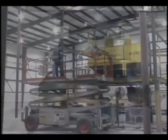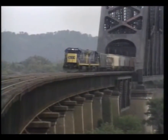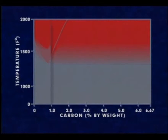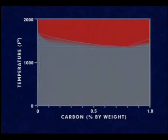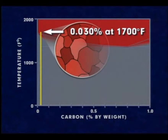For this reason, steel is suited to a wide range of engineering applications. Let's take a closer look at some examples of how carbon affects the hardness of steels. If steel containing 0.030% carbon is heated to about 1,700 degrees Fahrenheit, the structure will consist entirely of austenite.